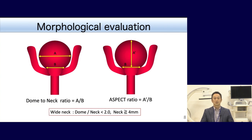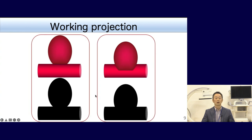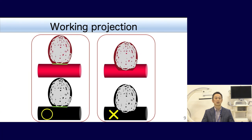Wide neck type aneurysms are difficult to treat with simple coil insertion due to risk of coil protrusion from the aneurysmal neck. As for morphological parameters, dome-to-neck ratio or aspect ratio are widely used. The most common definition of wide neck type is a dome-to-neck ratio less than 2, or a neck diameter of 4 mm or more. When we do coil embolization, working projection is very important — it is a view where we can recognize the borderline between the aneurysmal neck and the parent artery.